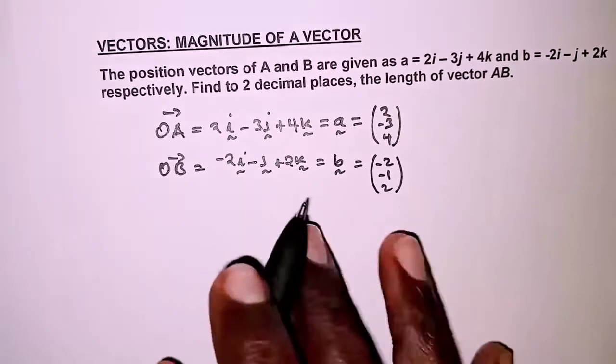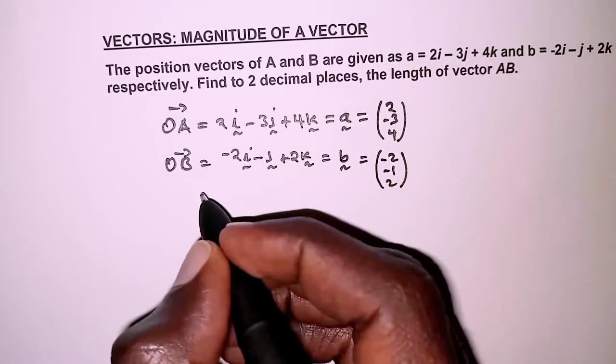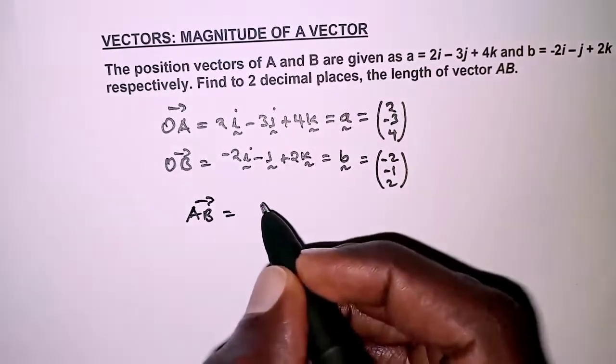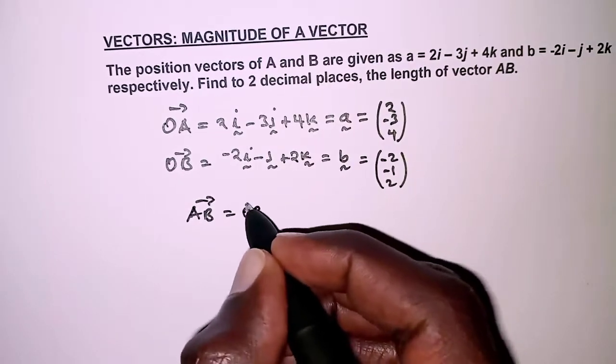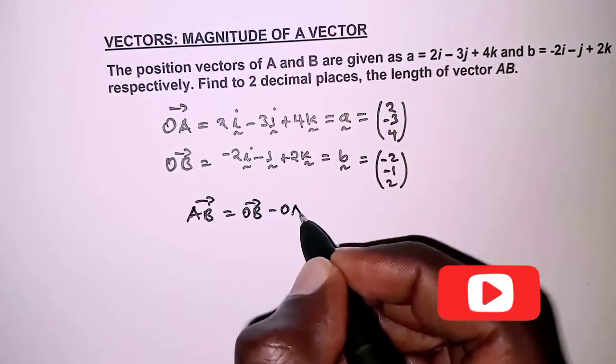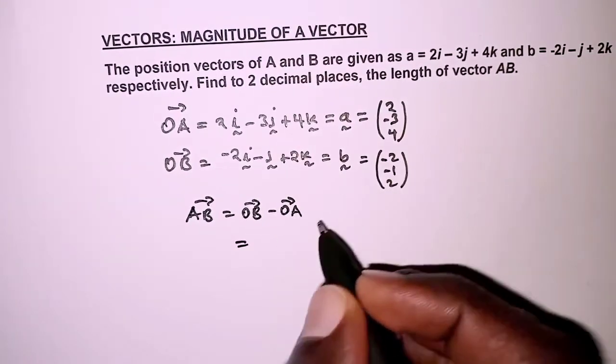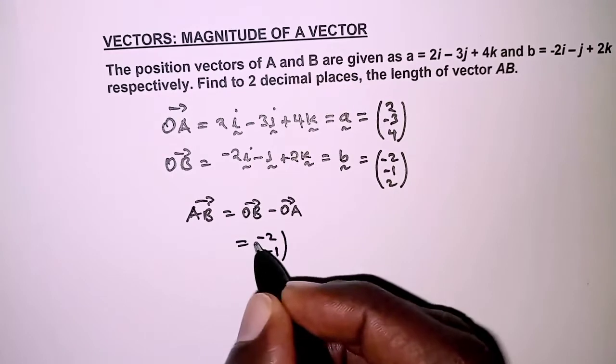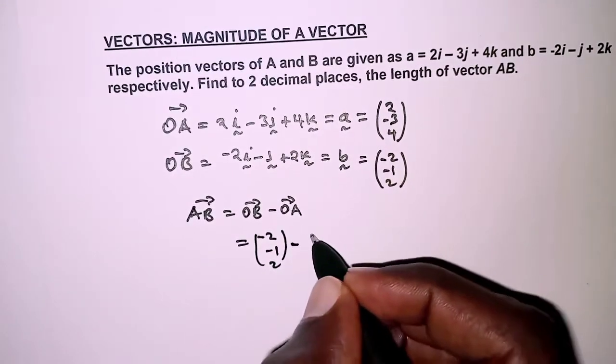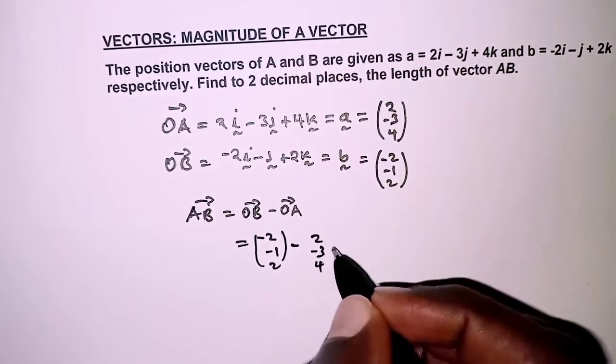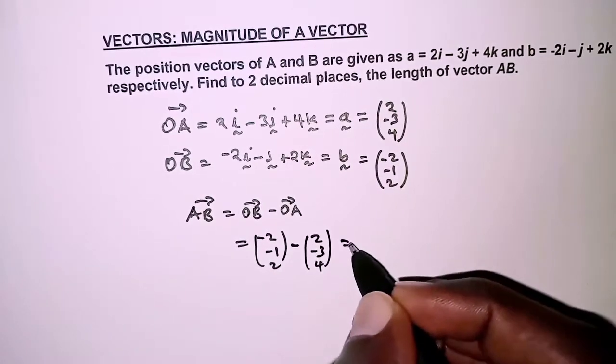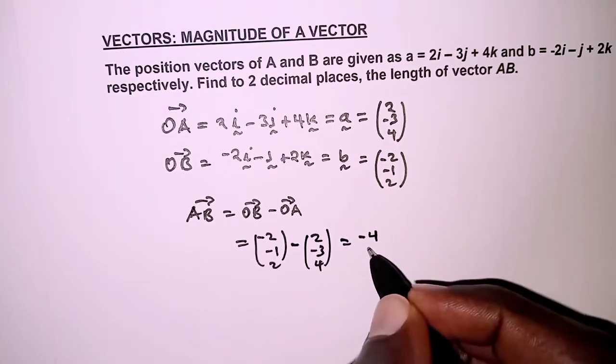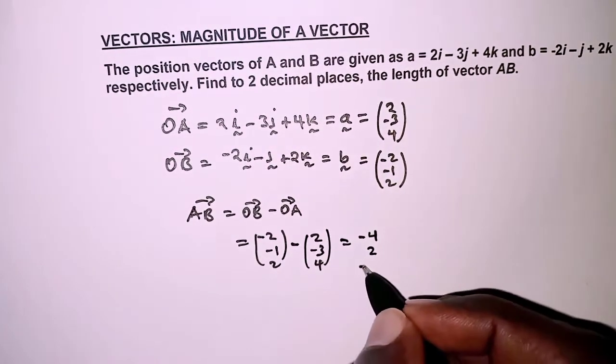From here we can now get the vector AB, and vector AB is simply OB minus OA. That is OB (-2, -1, 2) minus OA (2, -3, 4), and that is simply (-4, 2, -2).